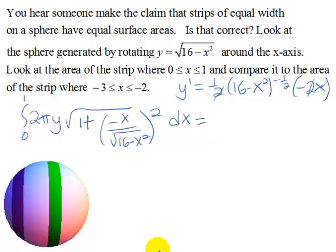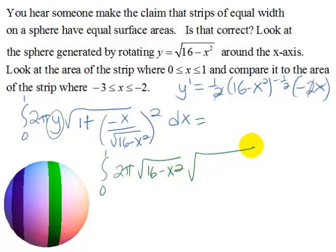We're going to replace this y, get it in terms of x, and then we'll go ahead and square this and see what we have. So we've got integral from 0 to 1 of 2π times the square root of 16 minus x squared.